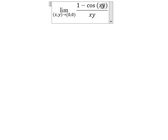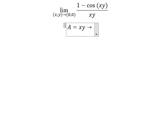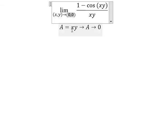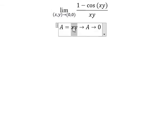In this situation I will set A equals to xy. We know that A approaches zero because x and y go to zero. When we multiply zero together you get zero.